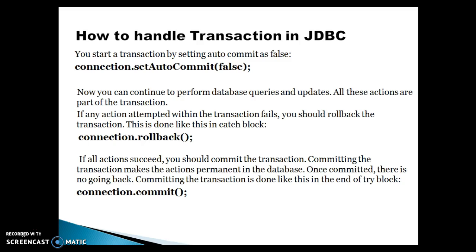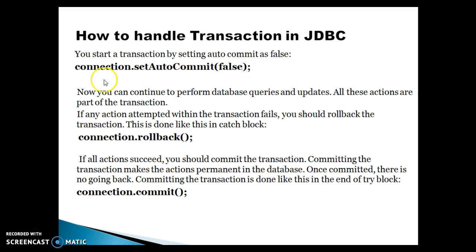First of all, you need to make autocommit false by calling a method called setAutoCommit on the connection object. You start a transaction by setting autocommit to false. If you have a connection object, the connection interface has a method called setAutoCommit — you need to set this flag to false so that control will be in your hand. If you execute any statement, it will not immediately commit into the database. Unless you commit explicitly, that result is not going to be stored in the database — it will wait for your commit.